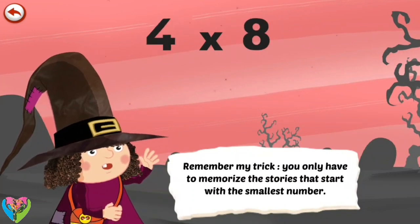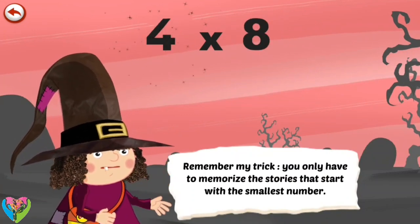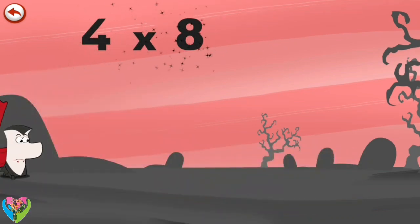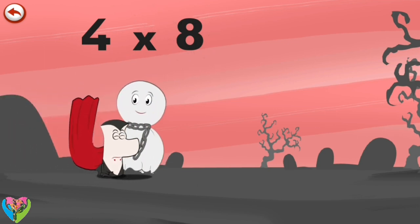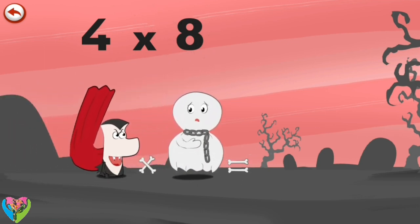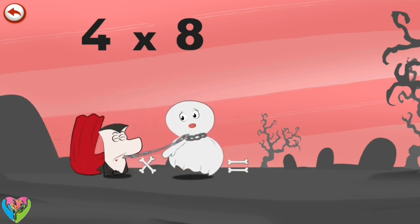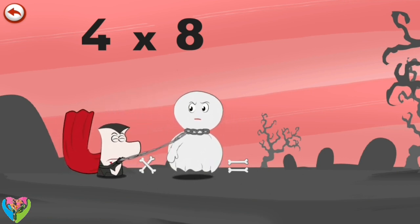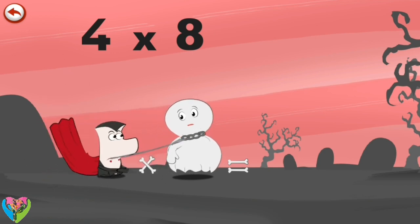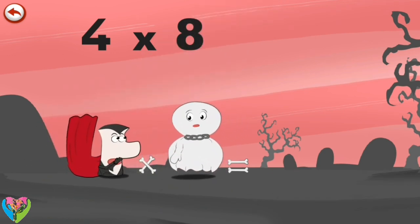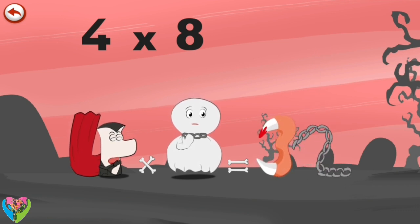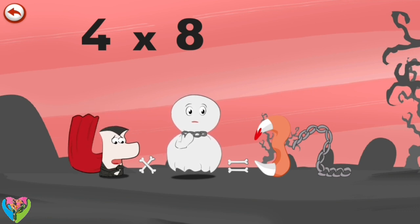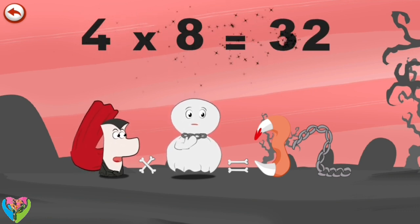Remember my trick. You only have to memorise the stories that start with the smallest number. What's the story of 4 times 8? When Vamp 4 sees the chain of Spooky 8 the ghost, he can't help trying to bite it. Spooky 8 won't stand for that and tugs hard on his chain. Vamp 4 resists and pulls as hard as he can, until suddenly the chain breaks. The vampire's teeth in the shape of a 3 are pulled out by the piece of chain in the shape of a 2. 4 times 8 is 32.